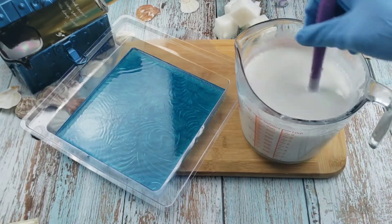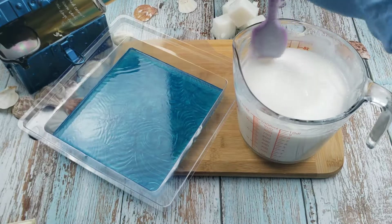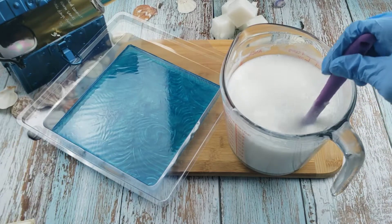After about 15 minutes I'm ready to work with the white base. I place the cup with the half melted soap base back in the microwave for 35 seconds to melt the rest of the soap.